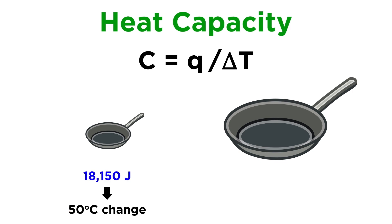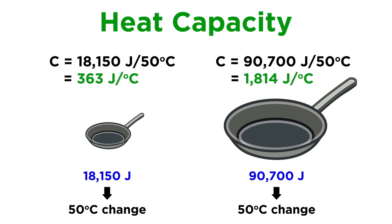Let's say it takes 18,150 joules of energy to raise the temperature of the small pan by 50 degrees, and it takes 90,700 joules of energy to raise the temperature of the large pan by 50 degrees. What will be the heat capacity of each pan? Plugging in these values, we should get 363 joules per degree Celsius for the small one, and 1814 joules per degree Celsius for the large one, which, as we would expect, is right around five times the other one.